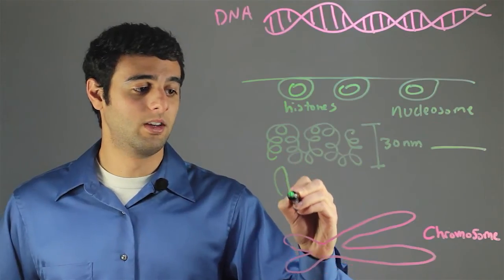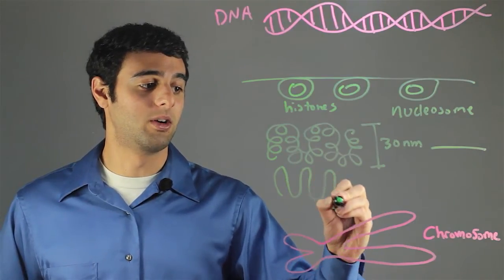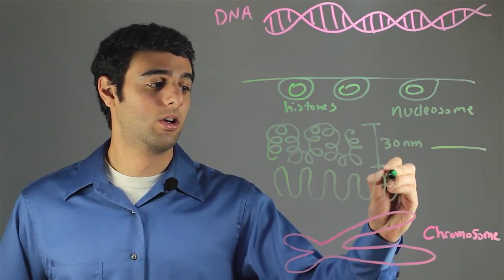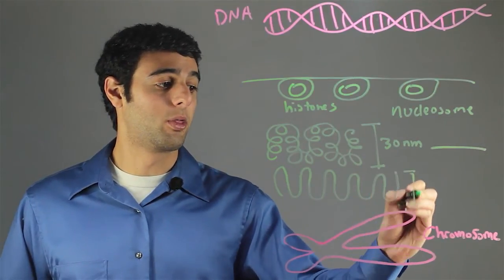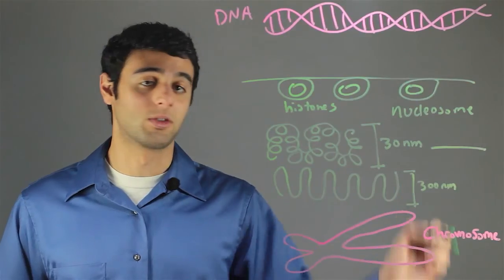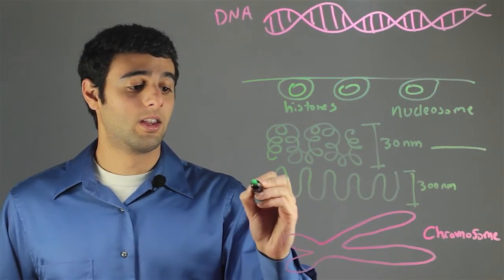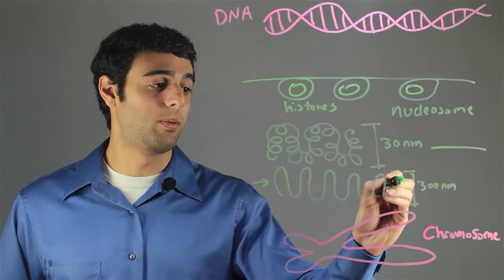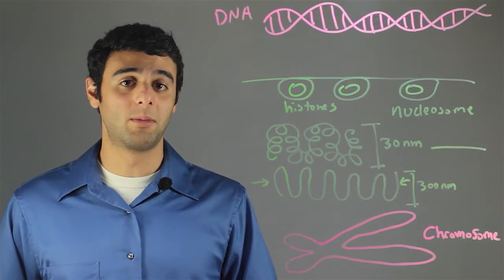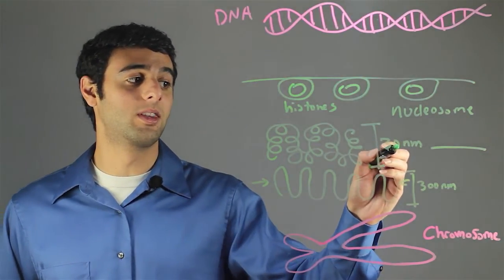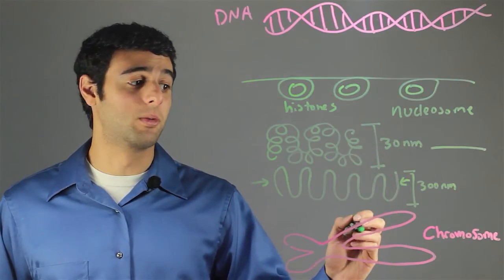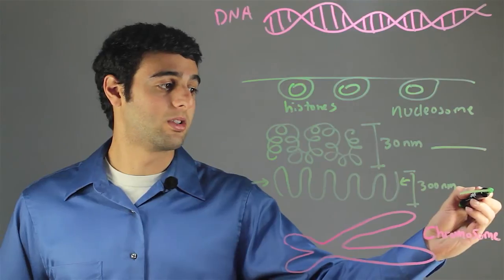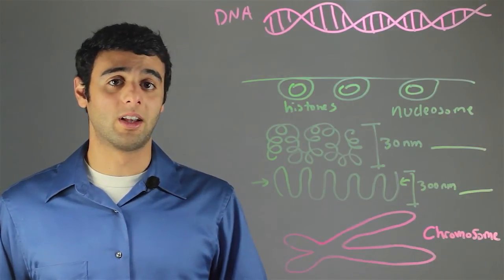We then have the 30 nanometer thick fiber form loops. These loops are 300 nanometers wide. These loops are then compressed to make a fiber very similar to the 30 nanometer fiber, but this time it is 300 nanometers, which I will also be representing as a straight line, which is now 300 nanometers wide.